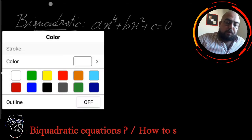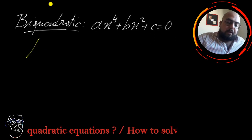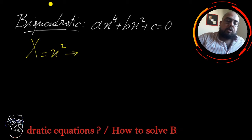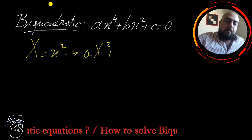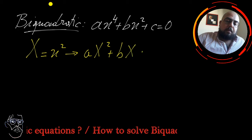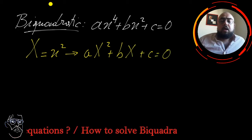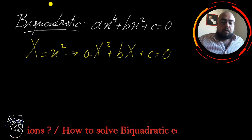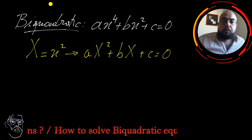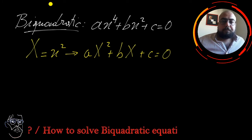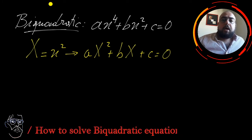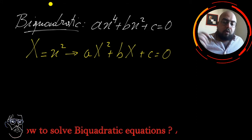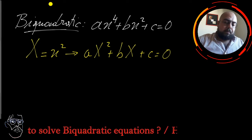To solve it, you simply suppose that capital X is equal to x², so your equation is transformed to aX² + bX + c = 0. As you can see, in this way you obtain a quadratic equation. You solve that quadratic equation using delta, the discriminant, and then you can check the existence or non-existence of its roots. Let's go and take some examples.